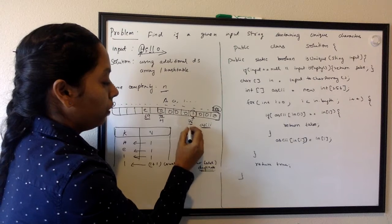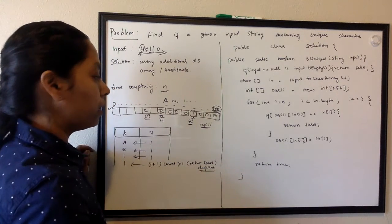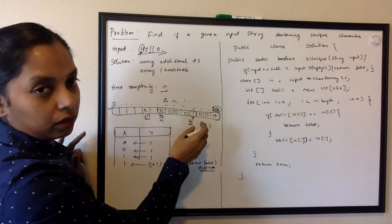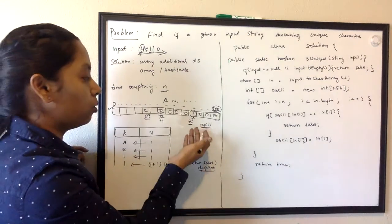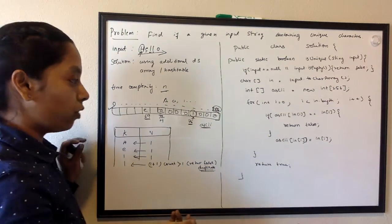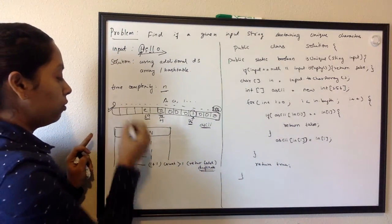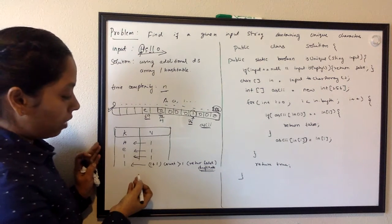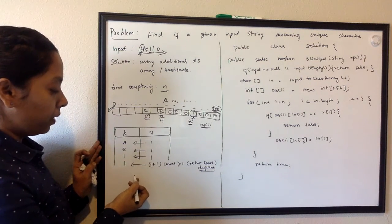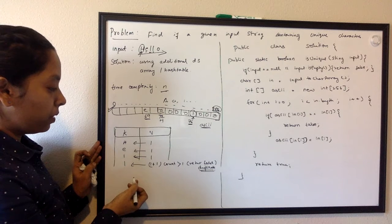All other elements will be zero. When you fill this up and it is no longer zero, then we can very well say that the input string is duplicate and then just return false. This is how we do it using array.